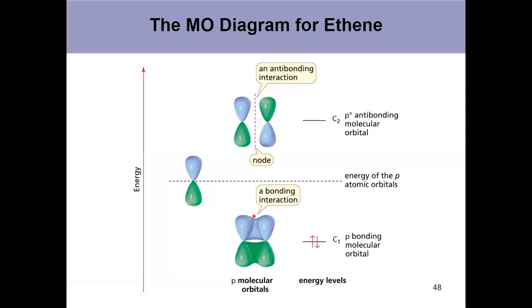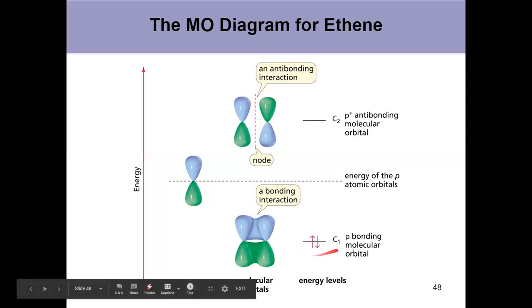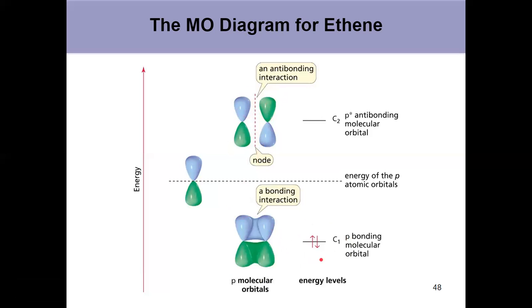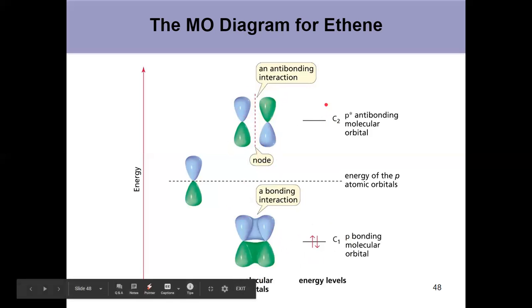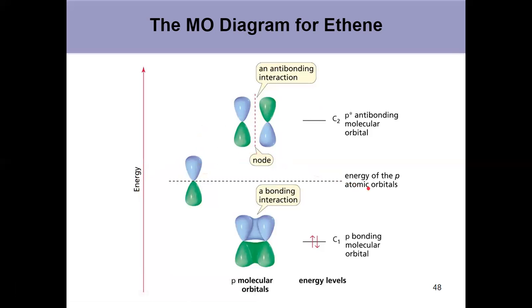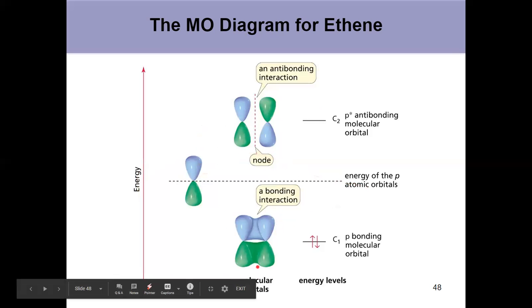Bonding being lower in energy. These electrons fill from the aufbau principle, from the bottom up, lowest energy to highest energy. So that means we get two electrons in this lower energy bonding MO and none up here, because each p orbital had one electron to contribute. So that's how a basic pi bond is formed.